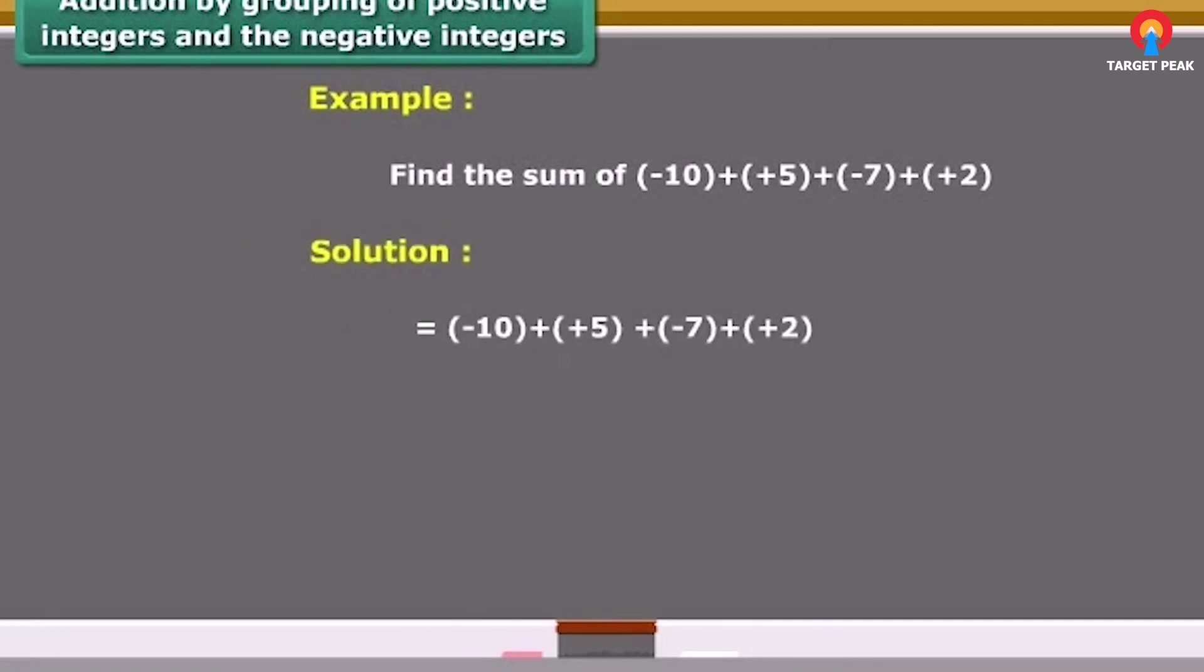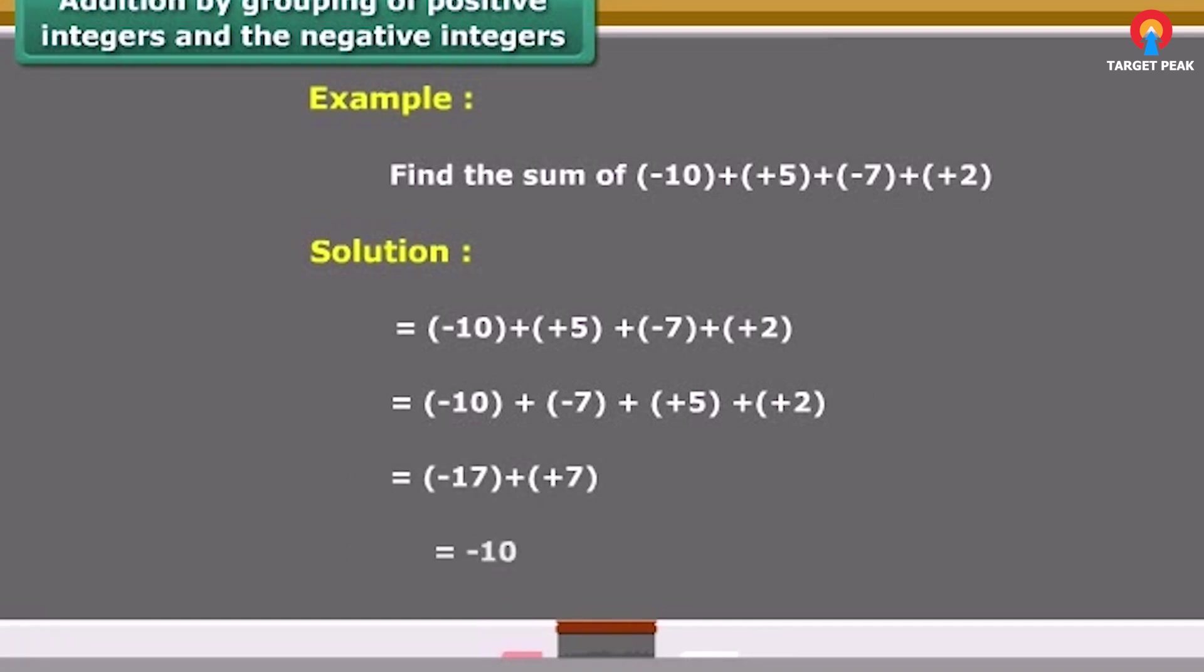For better understanding we can solve one example. We arrange the numbers so that the positive integers and the negative integers are grouped together.